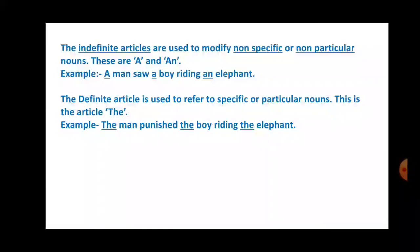Now, the definite article is used to refer to specific or particular nouns. This is the article the. For example, you see the man punished the boy riding the elephant. Now, here we are talking about the particular man who saw the boy riding the elephant. That's why we have written here the, because we are talking about the same man.